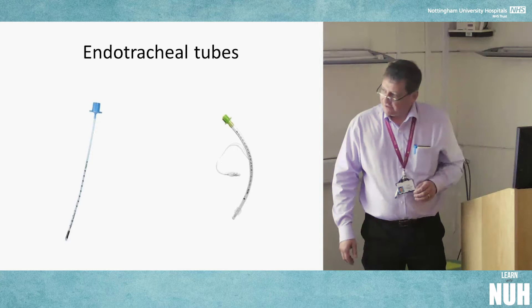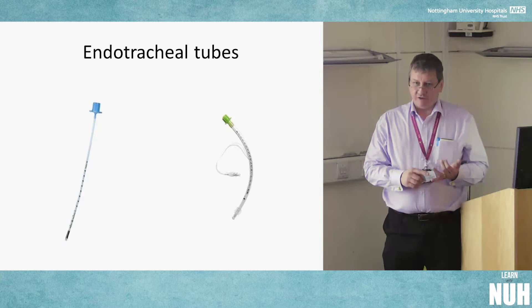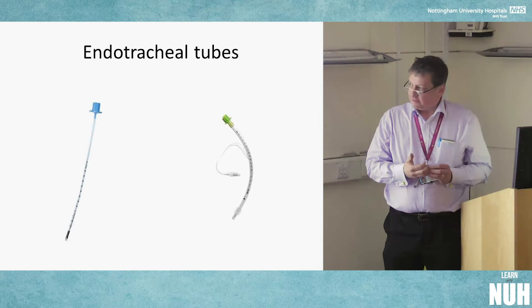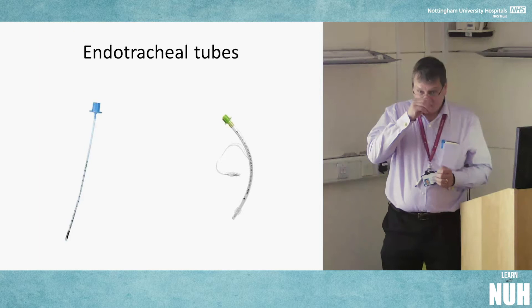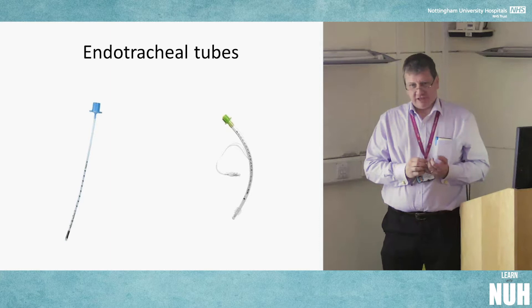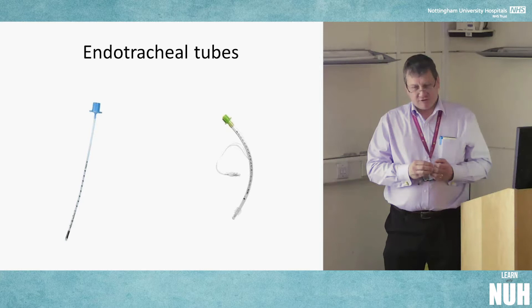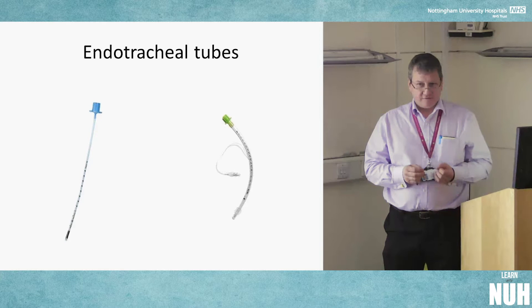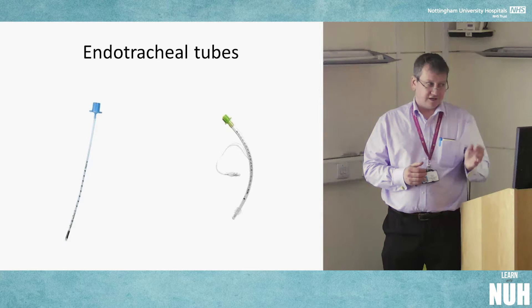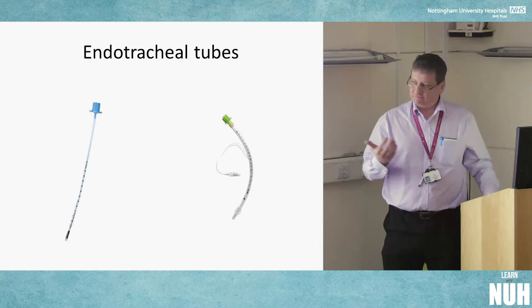Endotracheal tubes: the Portex blue line uncuffed tube is still used for very small neonates — sizes 2.5, 3, and 3.5, which need a stilette. The Microcuff tube, developed by Marcus Weiss et al., has a low-pressure distal cuff and goes down to size 3, from about a 3 kg baby upwards. Not all paediatric cuffed tubes are the same — we're currently on Parker Thin Cuff as an alternative. The term 'Microcuff' is a trade name, initially manufactured by Kimberley Clark, now Halyard.